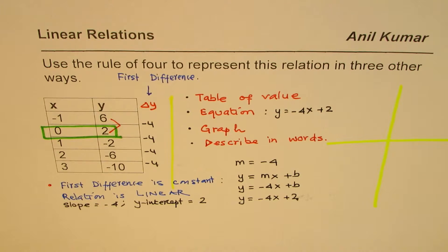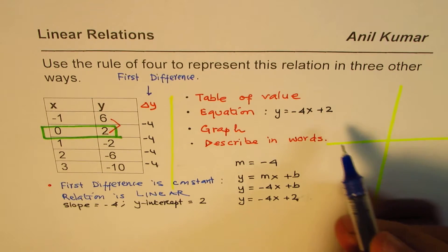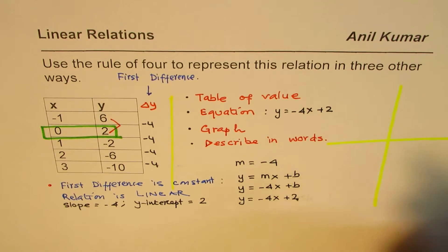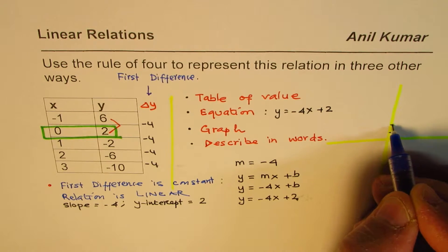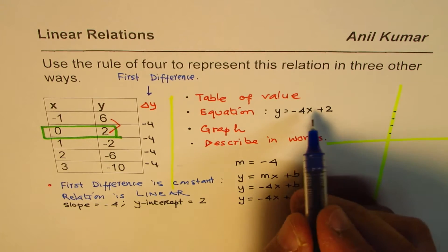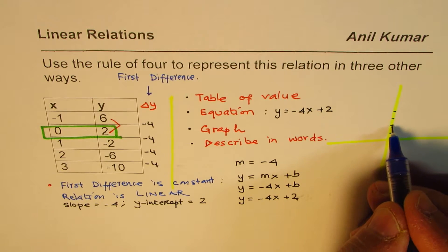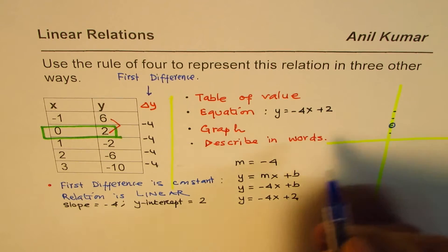So, we have a slope of minus 4. And y-intercept is 2. That is to say, if I have this as my axis, 1, 2, 3, 4, in that case, 2 is my y-intercept. So, this is one point, y-intercept.